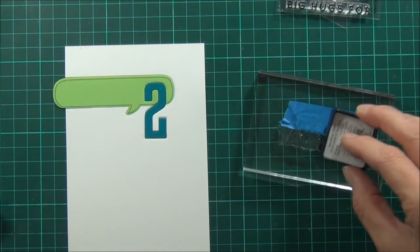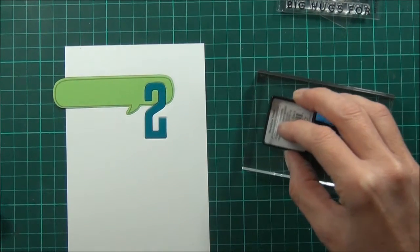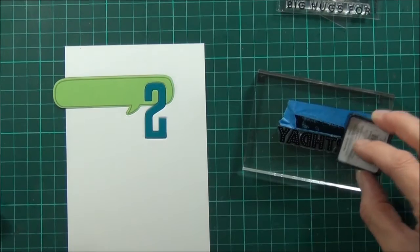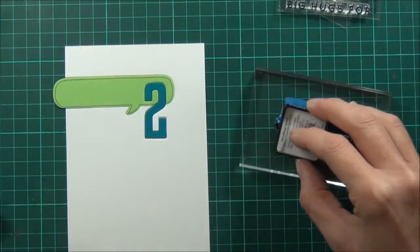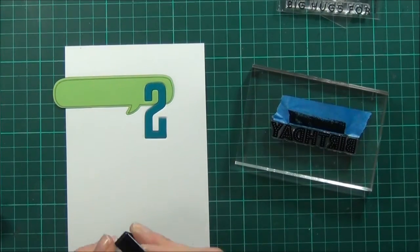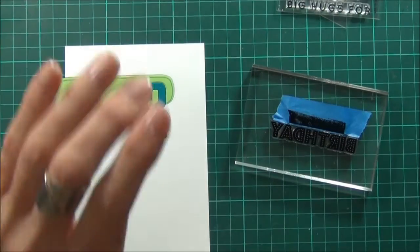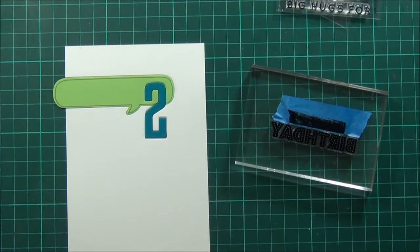And I've got some Versafine Onyx Black ink because I'm going to be stamping this over the die cut, so I know it's not going to work extremely well.